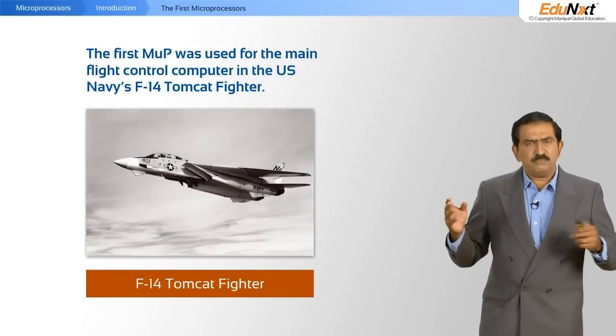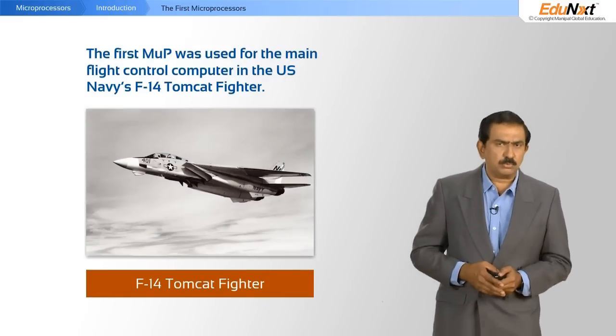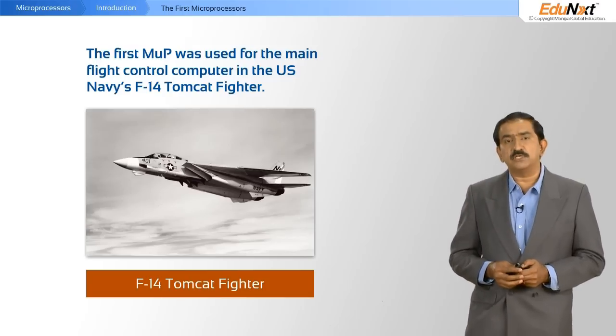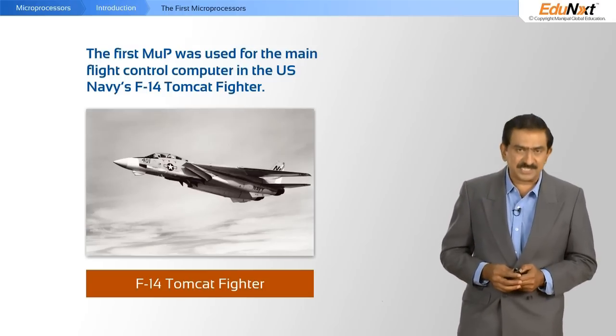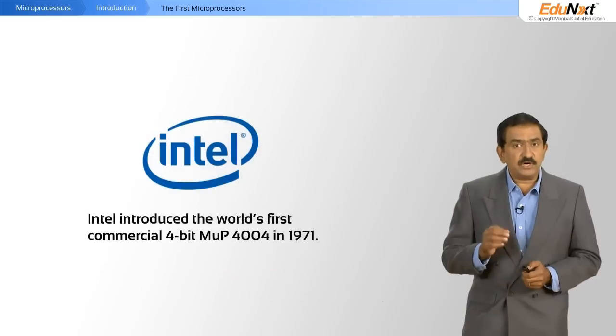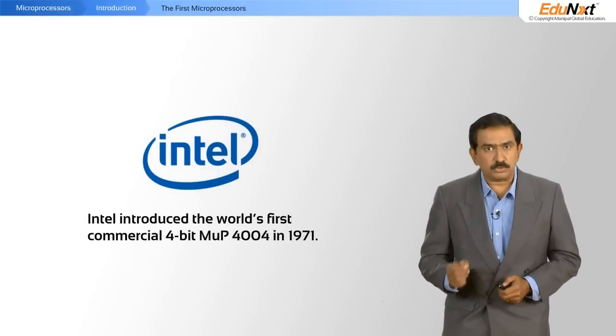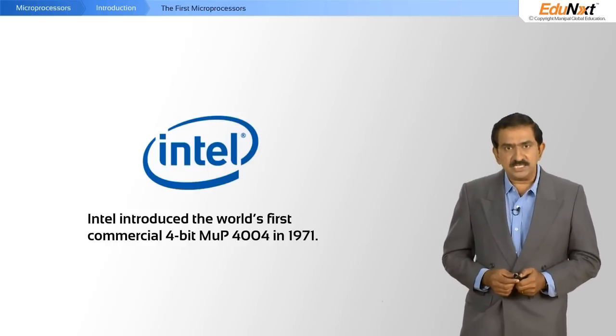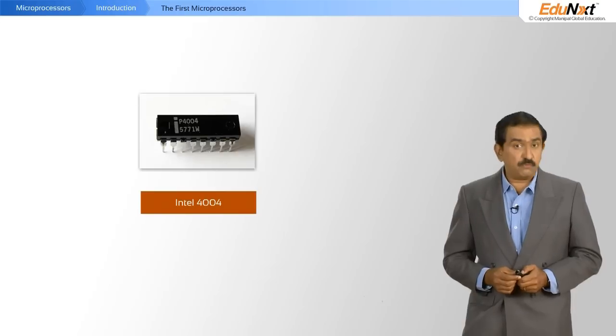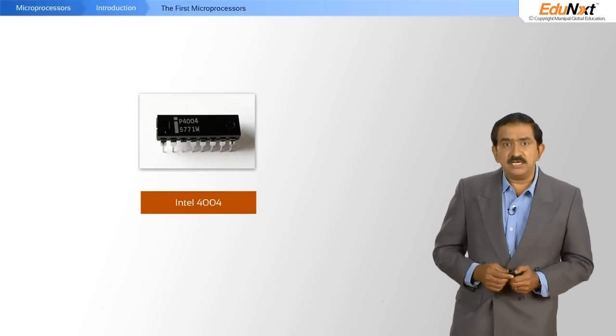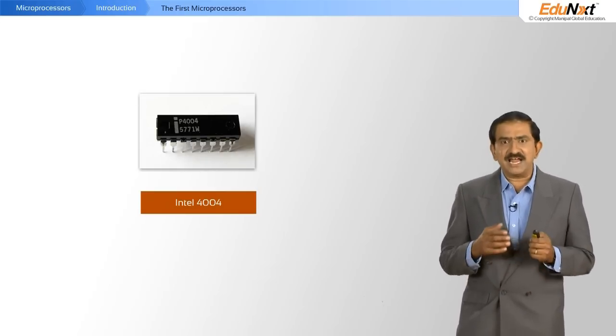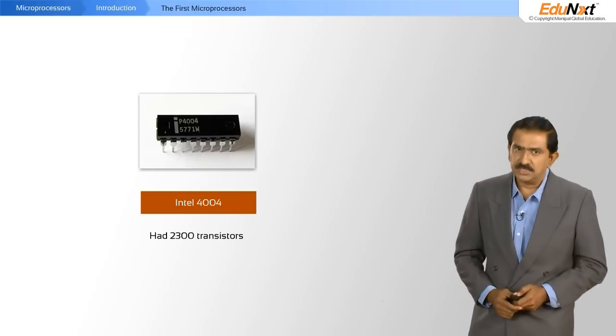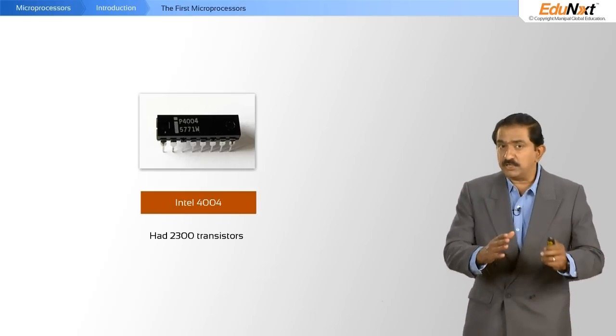So let's look at the history of microprocessors. The first microprocessor was really called the Tomcat and was made for the Department of Defense USA. But the world's first commercially available microprocessor was the 4004. This came from Intel, was a 4-bit processor, and contained a grand old number of 2,300 transistors.